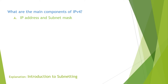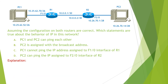The next question reads: assuming the configuration on both routers are correct, which statements are true about the behavior of IPv4 in this network? Let's look at the network diagram.